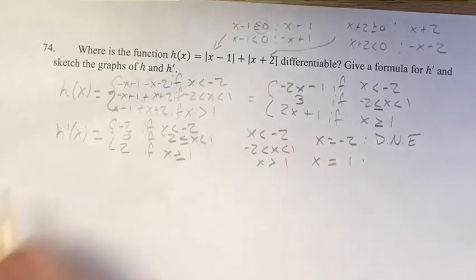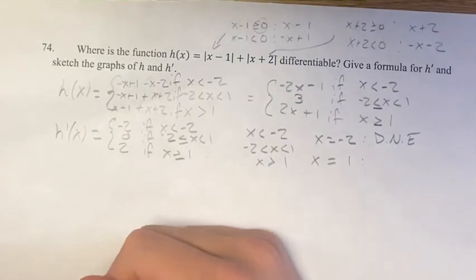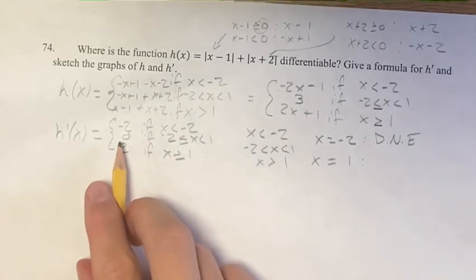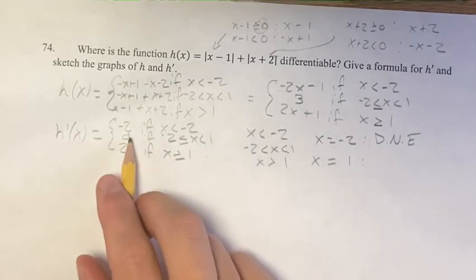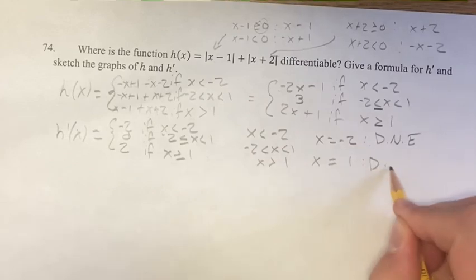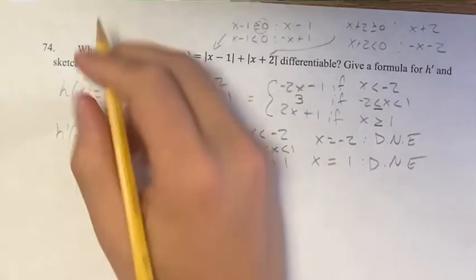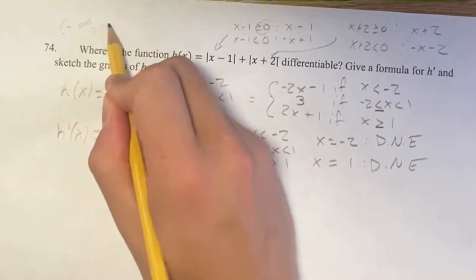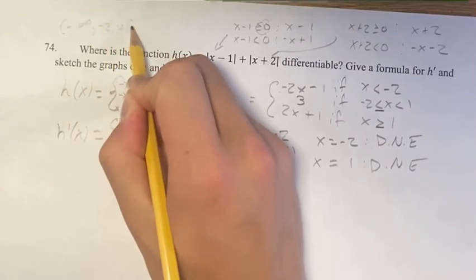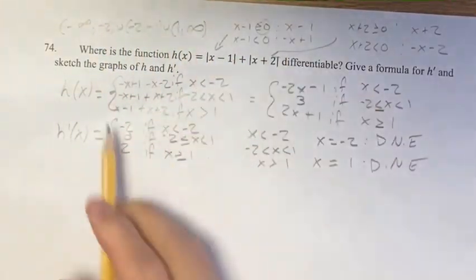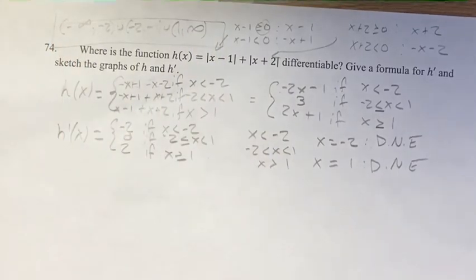When we graph it, it'll be a little more clear how that works. At x equals 1, the derivative approaches 0 from the left and 2 from the right, so this also does not exist. So where is h differentiable? Everything except x equals negative 2 and x equals 1 — in interval notation, that looks like negative infinity to negative 2, union negative 2 to 1, union 1 to infinity.